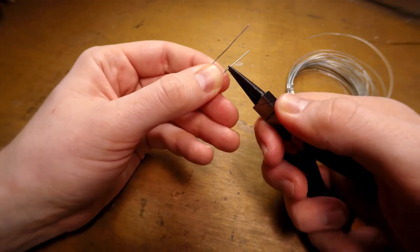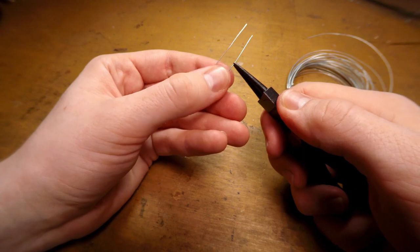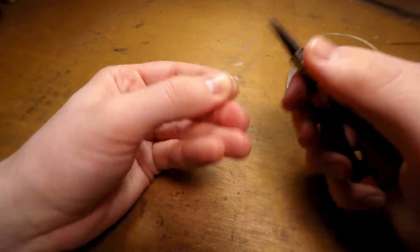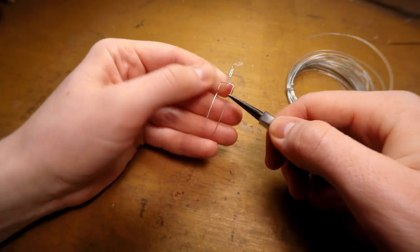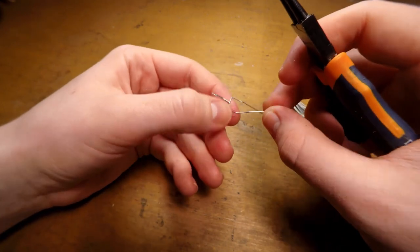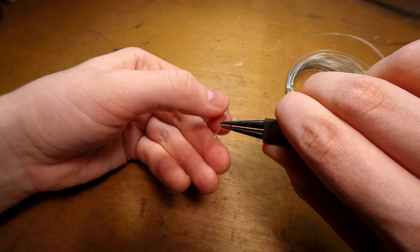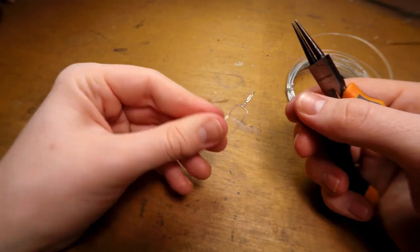After that, I start folding in the knees. So with the knees, you actually want to fold them backwards as opposed to forwards, which is something that didn't make a lot of sense to me when I started out, but what this does is it actually forms the calves of the miniature on your armature. I then go ahead and bend out the feet, and it looks something kind of like this.